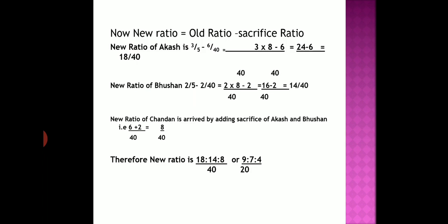Therefore, what is the new ratio of all three partners? It is 18 by 40 for Akash and 14 by 40 for Bhushan. For Chandan, it is not directly given in the problem. How do we calculate it? The total contribution by the old partners becomes the new profit sharing ratio of the new partner. So just add the sacrifice made by Akash and Bhushan: 6 by 40 plus 2 by 40 equals 8 by 40. The final answer: new profit sharing ratio is 18 to 14 to 8 by 40, or simplified, 9 to 7 to 4 by 20.